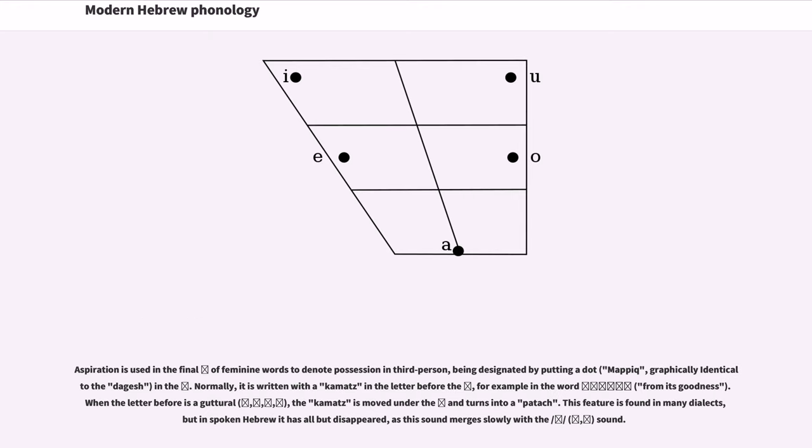Aspiration is used in the final he of feminine words to denote possession in third person, being designated by putting a dot (mappiq, graphically identical to the dagesh) in the he. Normally, it is written with the kamatz in the letter before the he, for example in the word 'from its goodness'. When the letter before is a guttural, the kamatz is moved under the he and turns into a patach. This feature is found in many dialects, but in spoken Hebrew it has all but disappeared, as this sound merges slowly with the /a/ sound.